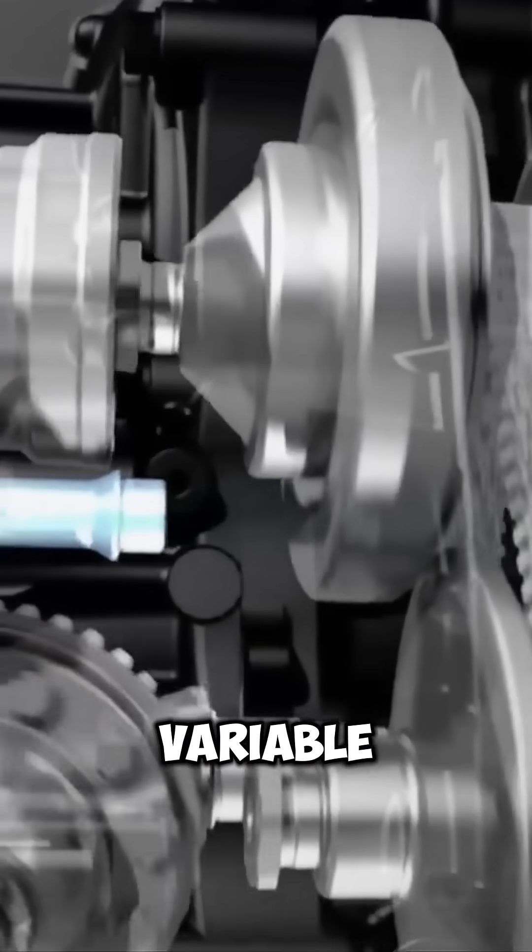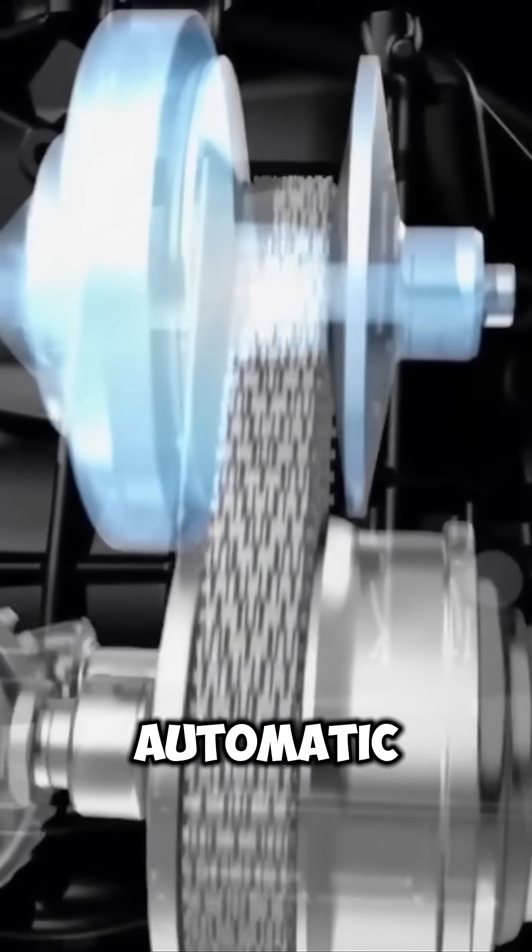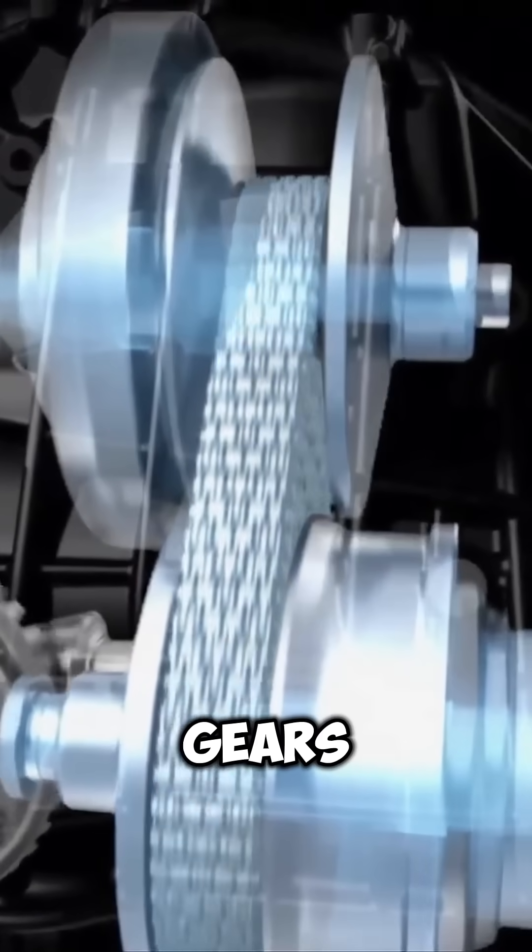A CVT, or continuously variable transmission, is a type of automatic gearbox that doesn't have fixed gears.